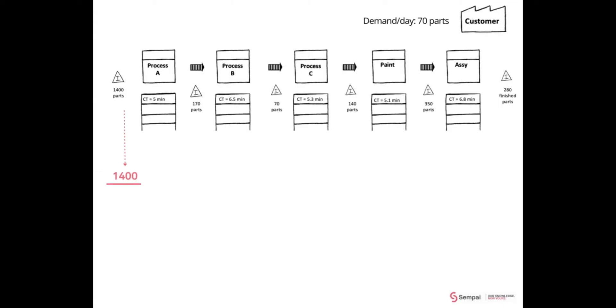So the 1400 parts of raw materials there, we divide it by 70—that's 20 days. So that 1400 parts represents 20 days. Then you go through all the other inventory accumulated between the processes and convert them into days.